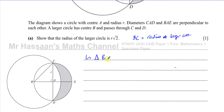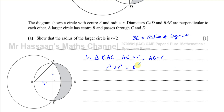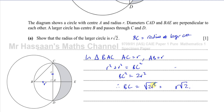In triangle BAC, we know that AC is equal to R and AB is also equal to R — they're both the radius of the small circle. So we have a right-angle triangle and we can use Pythagoras' theorem. R squared plus R squared equals BC squared. So BC squared equals 2R squared, therefore BC equals the square root of 2R squared, which is R times the square root of 2.